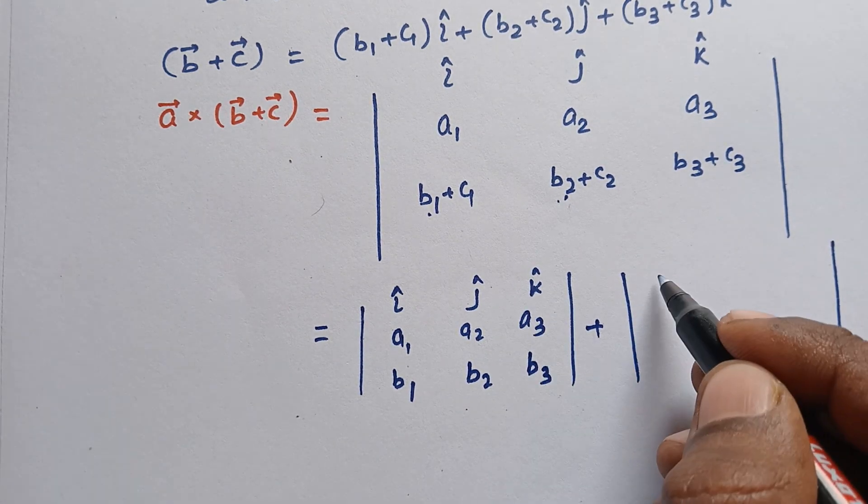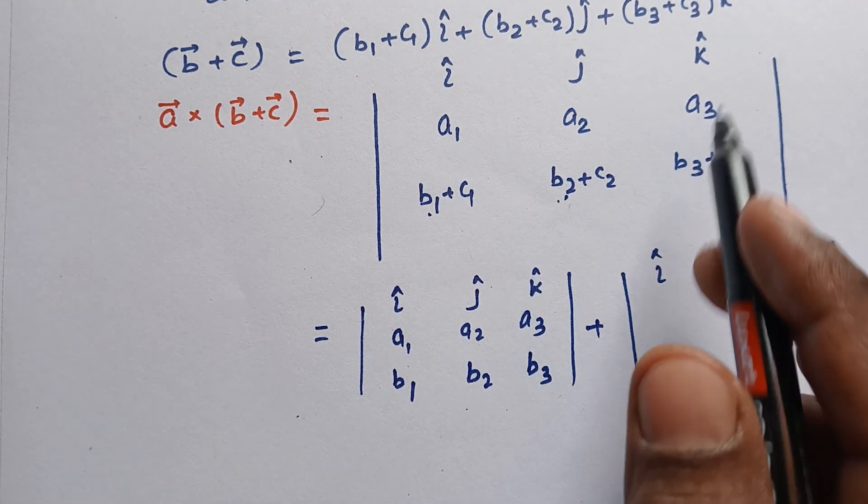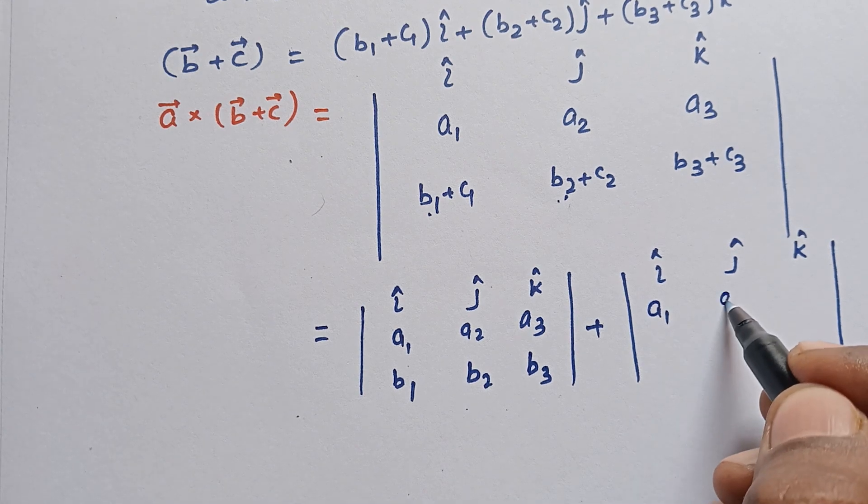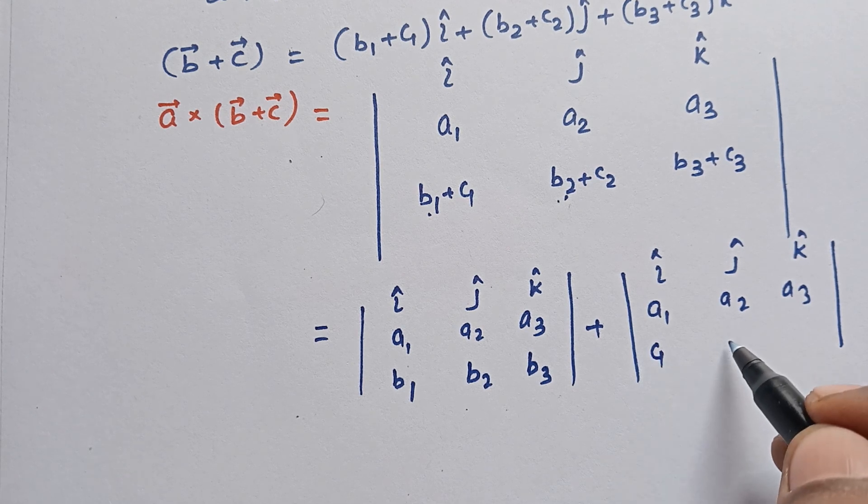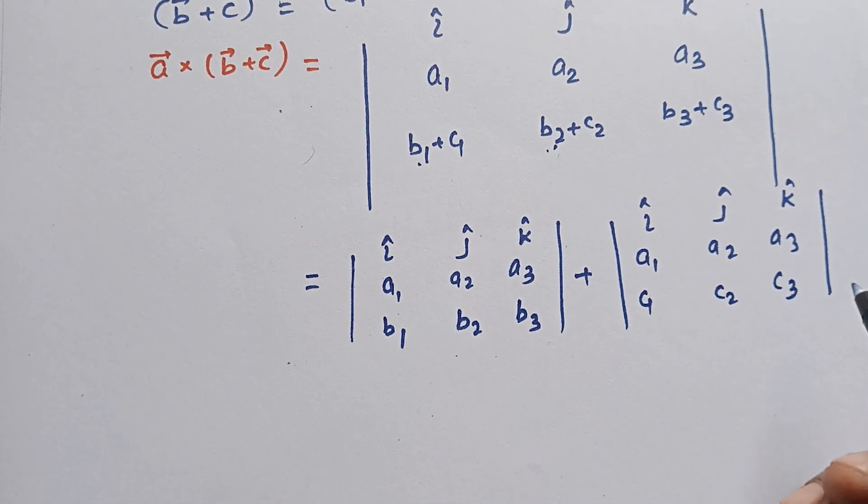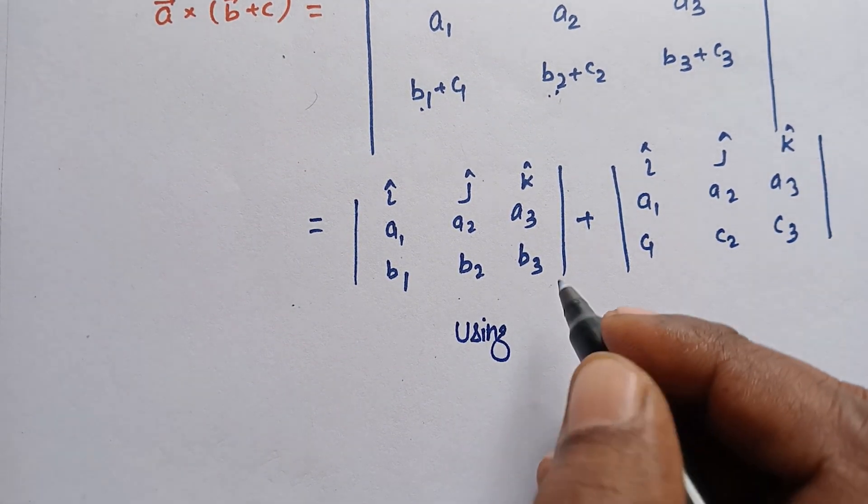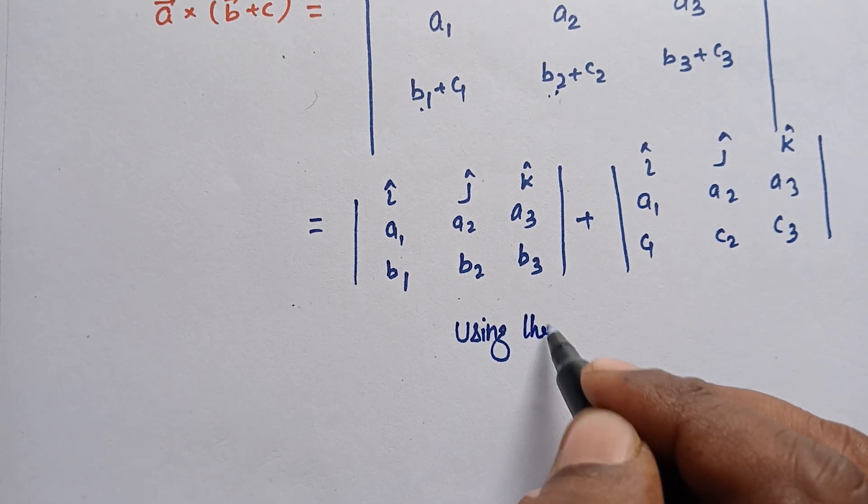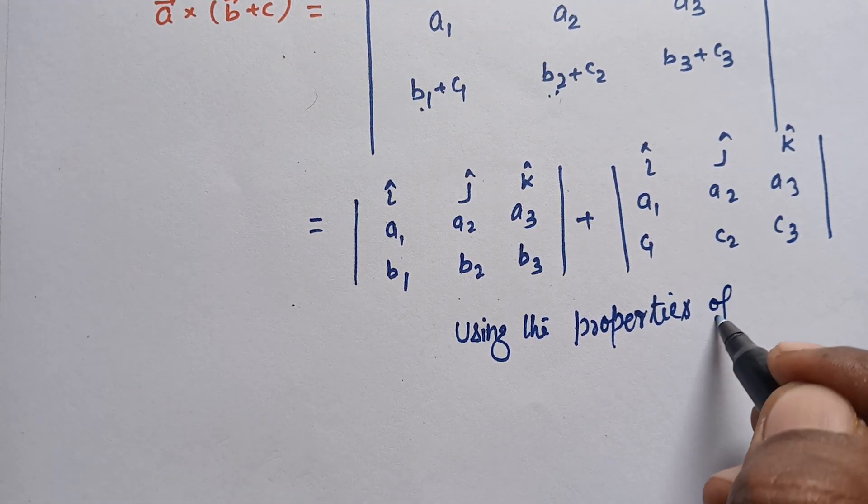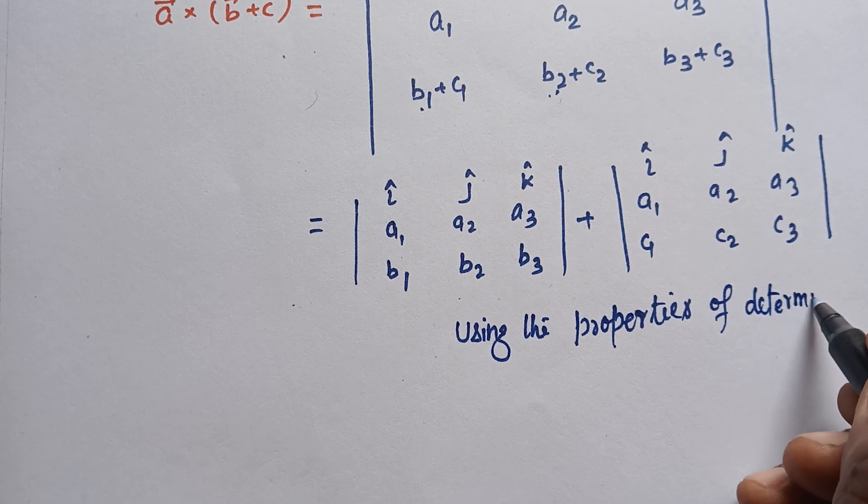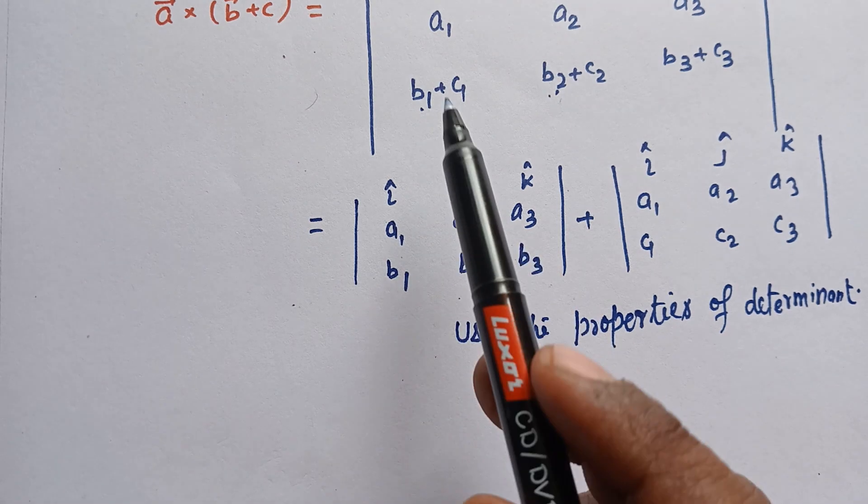Then this will remain as î, ĵ, k̂; the first row is a1, a2, a3. Now we take the second term c1, c2, c3. Using the properties of determinant, we can split two terms into two separate determinants.